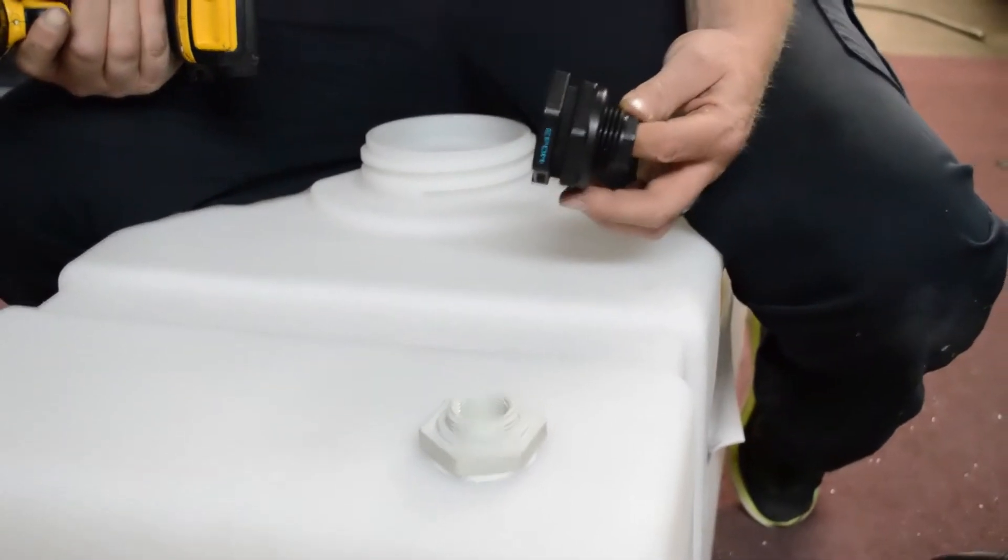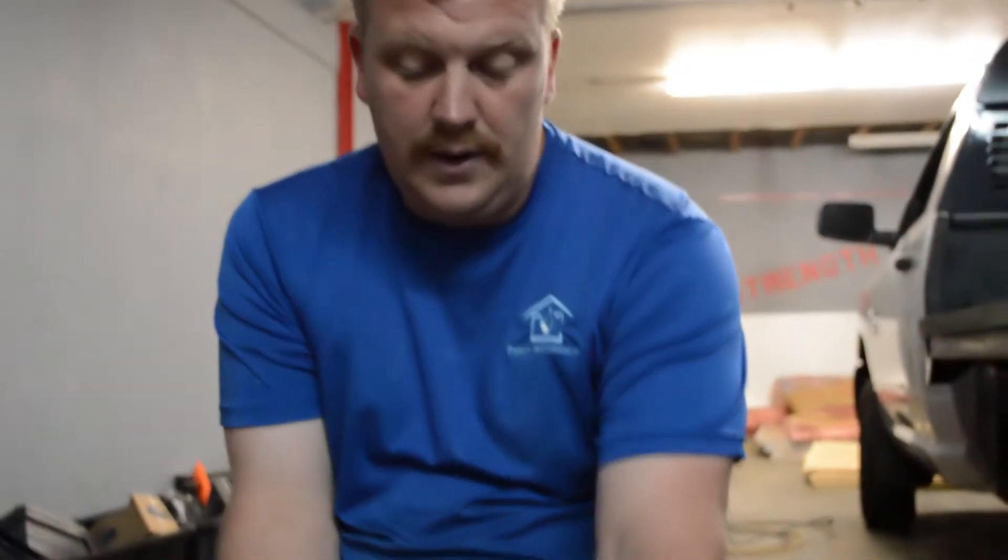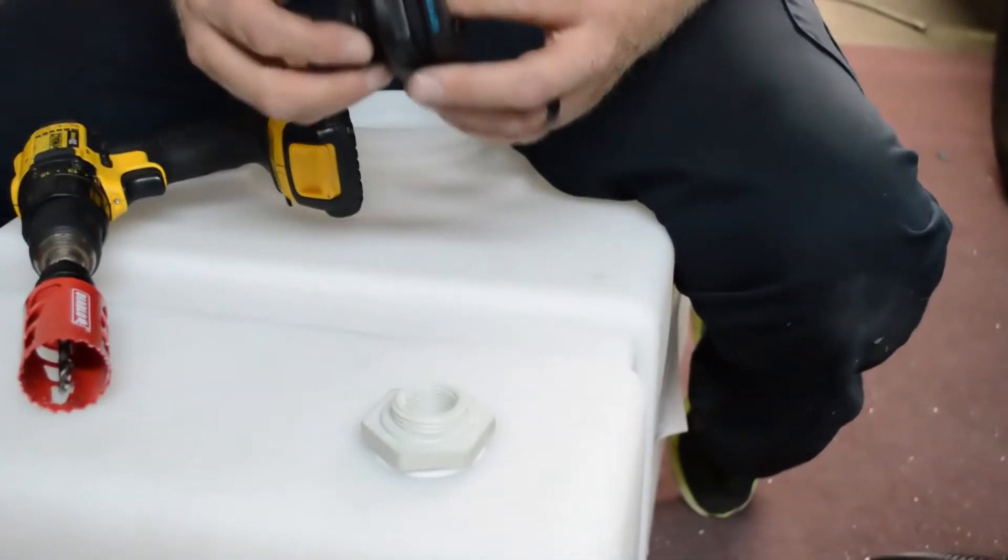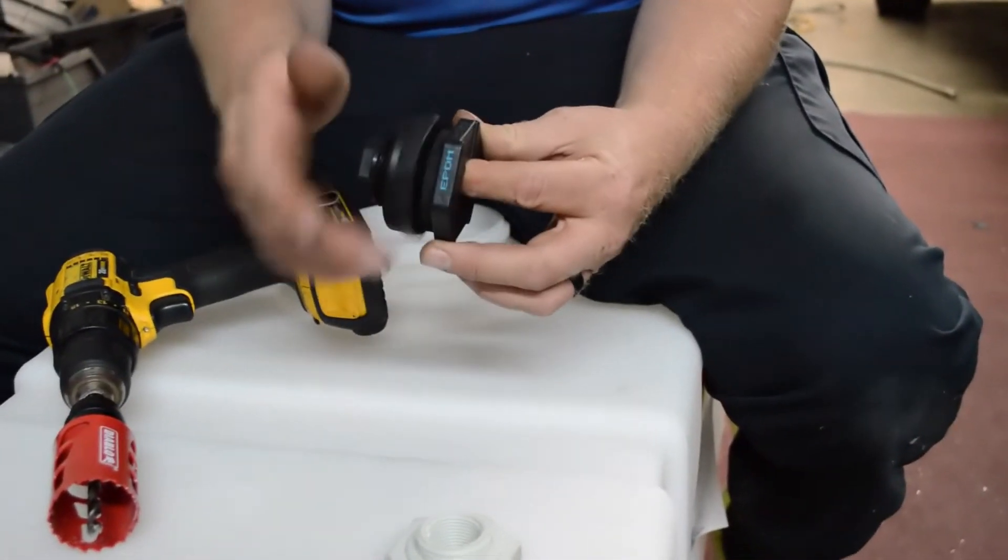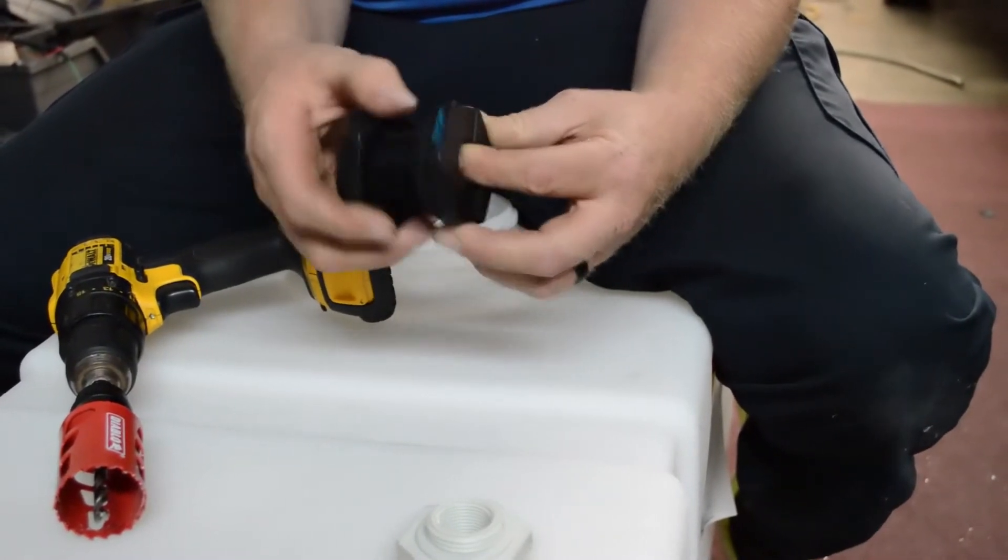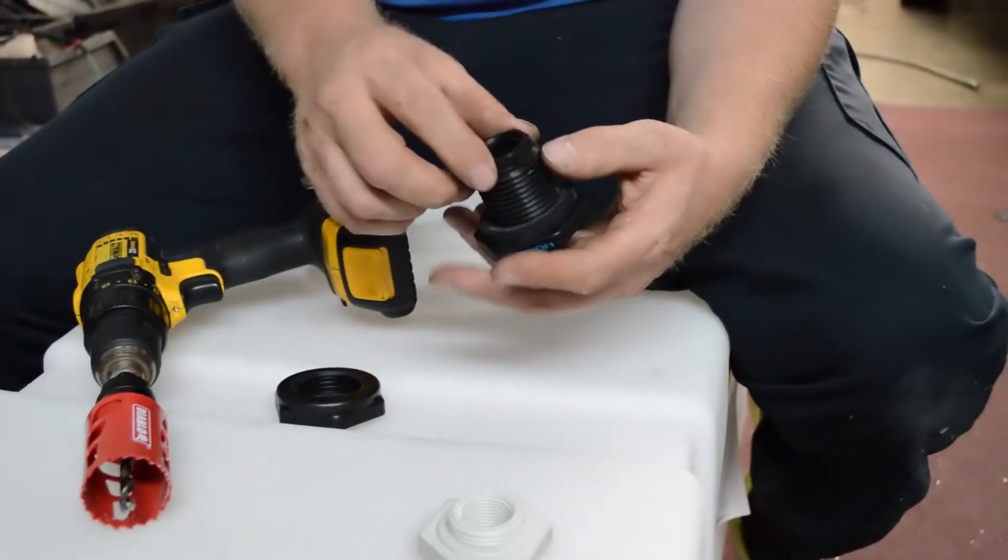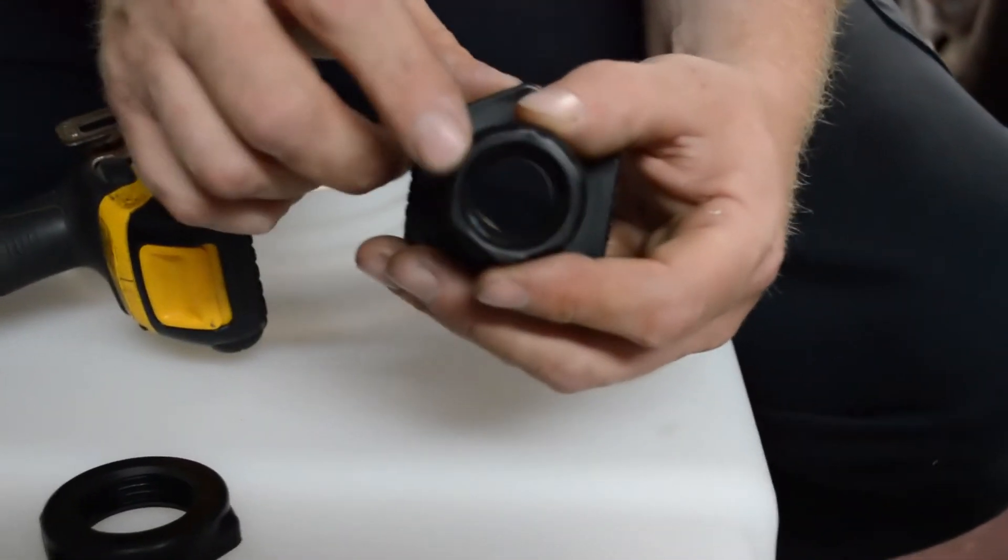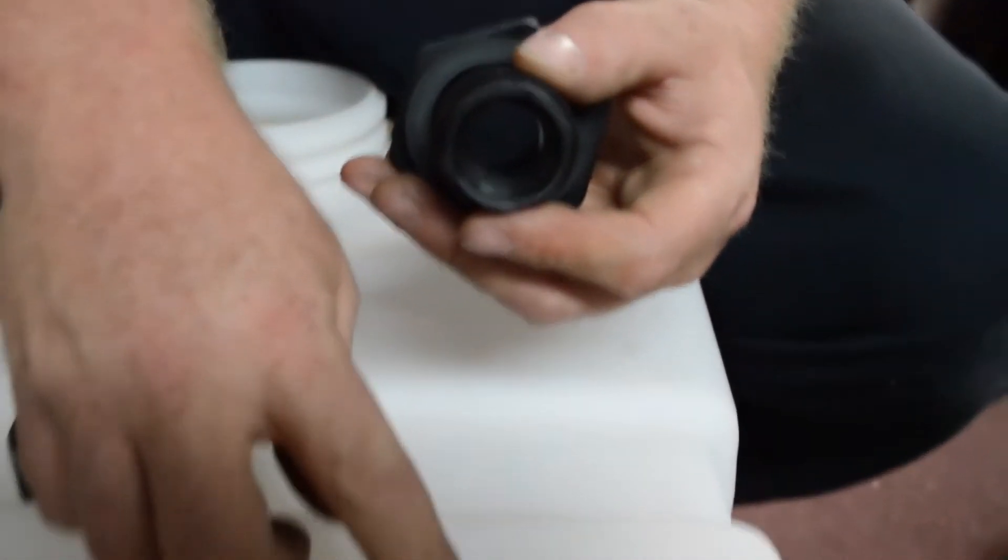This one here is from Tractor Supply, this one here is from Amazon. This is a little bit better plastic and it's actually cheaper. It's a little bit stronger because these here get very brittle if you over tighten them. So you can see how thick this one is versus that one.